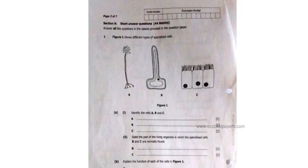Question 1 reads: figure 1 shows different types of specialized cells. We have cell A here, cell B, and cell C. Question 1A1 says: identify the cells A, B, and C.